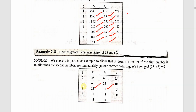R1 divided by R2: 25 divided by 10. The quotient is 2 and the remainder is 5. That is, 10 times 2 equals 20, and 25 minus 20 is 5. We copy the values: R2 to R1 and remainder to R2. So new R1 = 10 and R2 = 5.